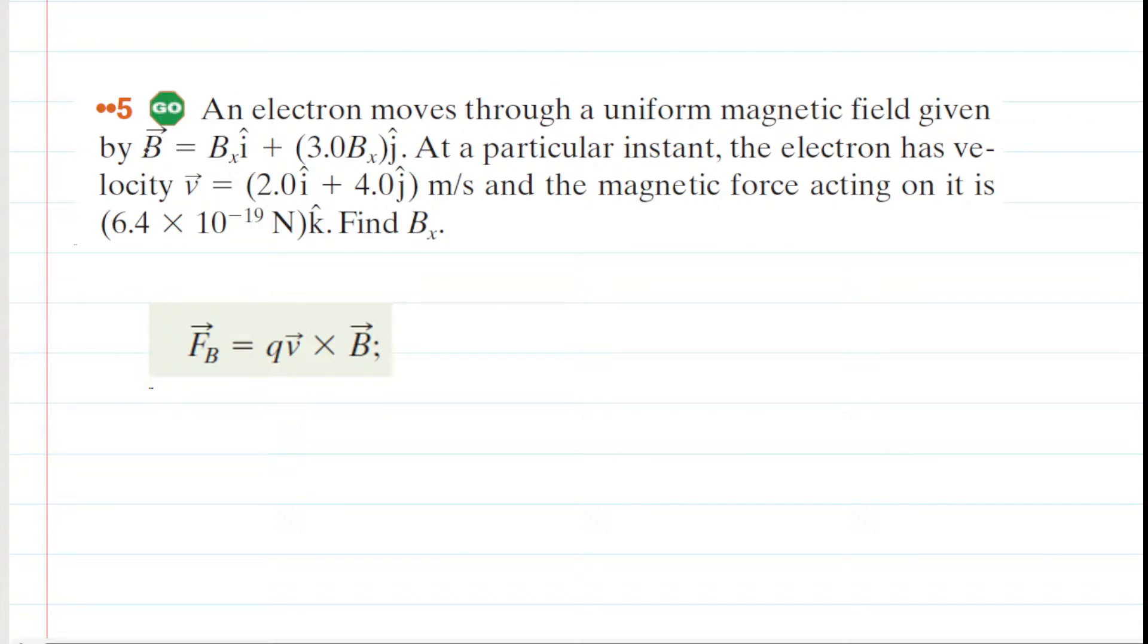So in this question, we have an electron moving through a uniform magnetic field. We have the magnetic field vector given right here, a velocity vector, and then a force vector as well. And our job is to find this mysterious value b sub x.